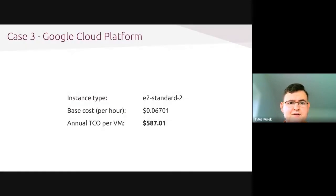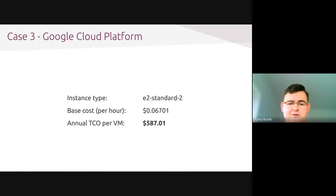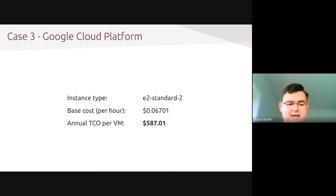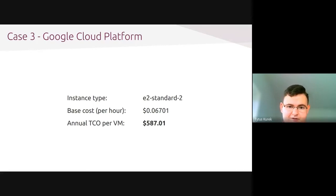And when using Google Cloud Platform instead, again the numbers are very similar. As you can see, those numbers do not differ too much when using leading public cloud providers, because they have to keep their prices very similar in order to be competitive with each other. This also explains why organizations usually cooperate with a number of public cloud providers to negotiate better prices, since the prices are very close.